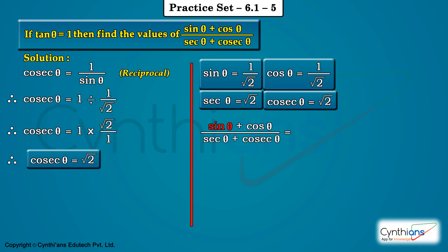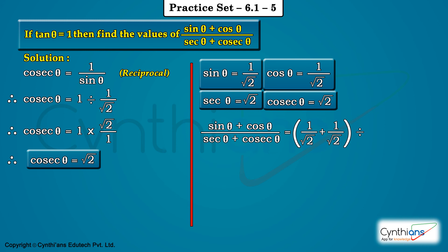In place of sin theta we write 1 upon root 2, plus in place of cos theta we write 1 upon root 2, and put it in brackets. The denominator: sec theta is root 2 plus cosec theta is also root 2.